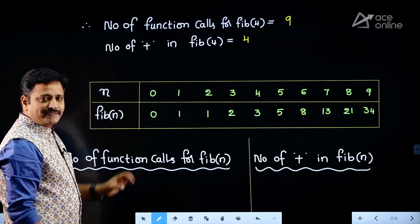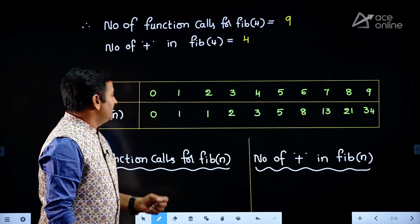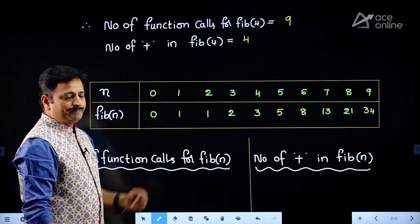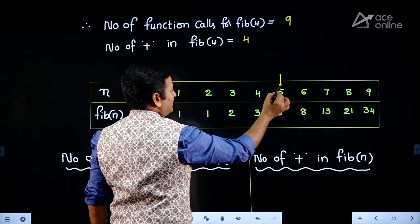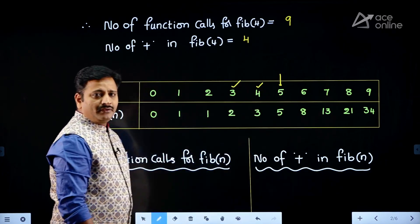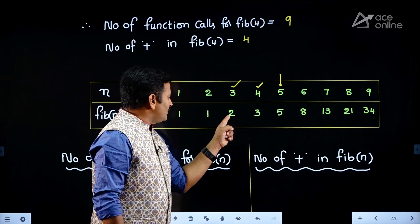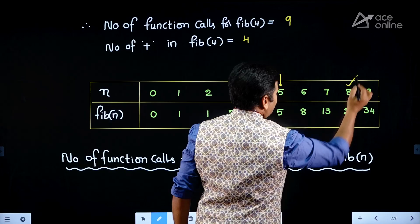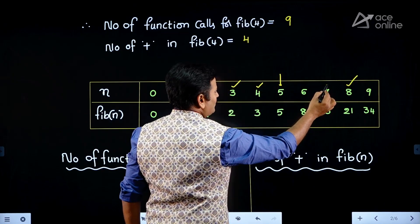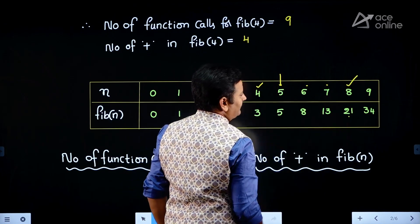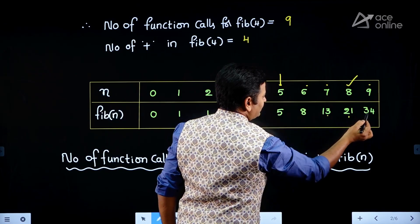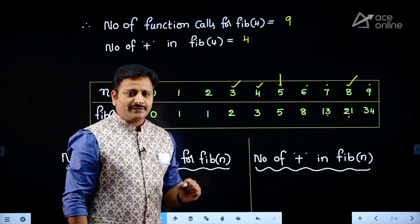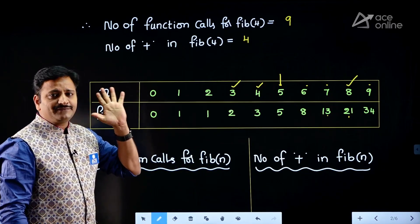To use the shortcut method, you need to design the Fibonacci table. When n equals 0, Fib of 0 is 0; when n equals 1, Fib of 1 is 1. To find Fib of 5, add the two preceding terms: Fib of 3 is 2 and Fib of 4 is 3, so 2 plus 3 equals 5. Similarly, Fib of 8 is 8 plus 13 equals 21, and Fib of 9 is 13 plus 21 equals 34. Once you remember this Fibonacci table, computing the number of function calls is very easy.